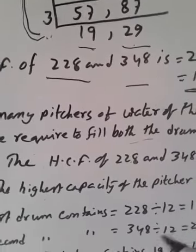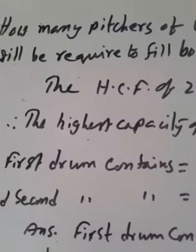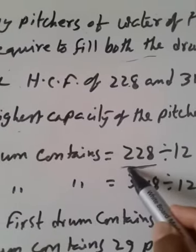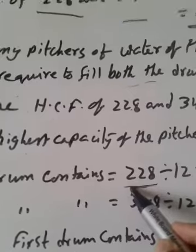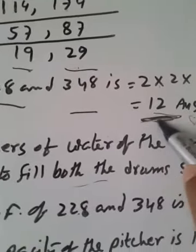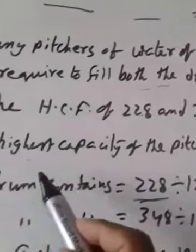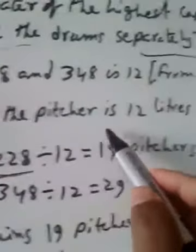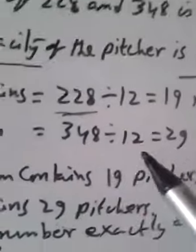So, in one drum, one drum, 228 litre and highest capacity of the pitcher is GCF. GCF is 12 litre and so, highest capacity of the pitcher will be 12 litre.